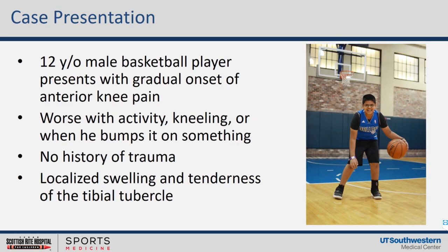Our case is a 12-year-old male basketball player presenting with gradual onset of anterior knee pain. His pain is worse with activity, when he kneels down, or when he bumps it on something. He doesn't recall any specific history of injury or trauma to the knee. Upon presentation, he complains of localized swelling and has tenderness over the tibial tubercle.